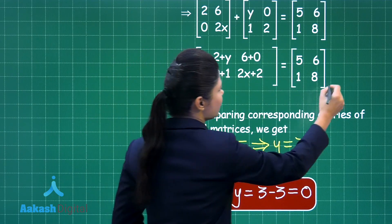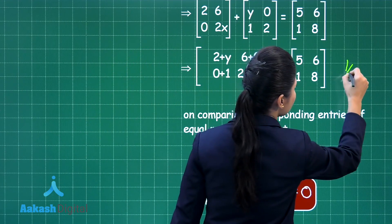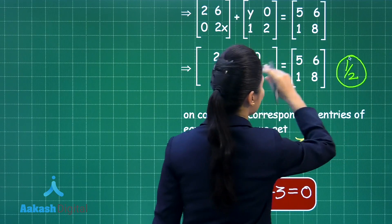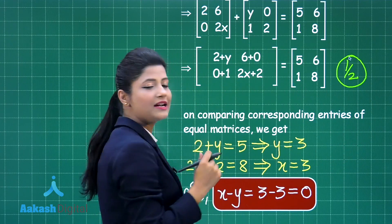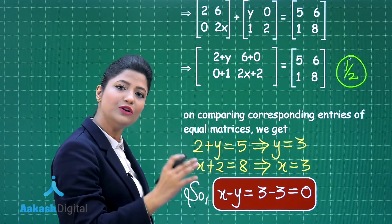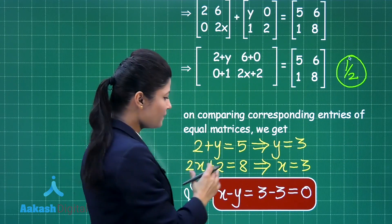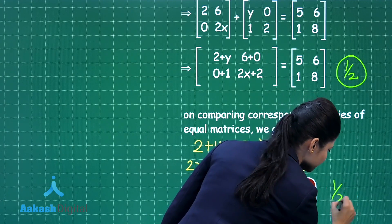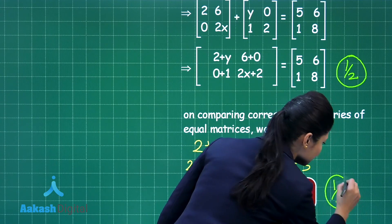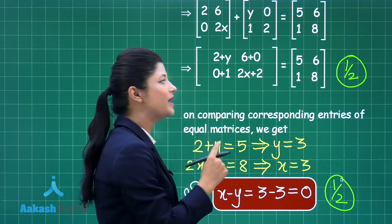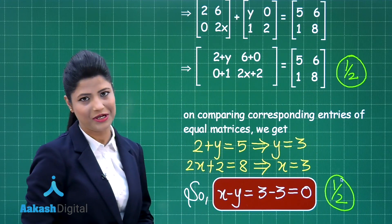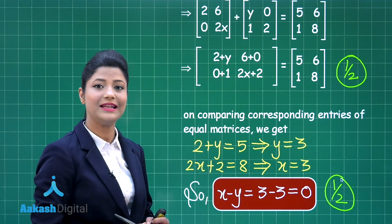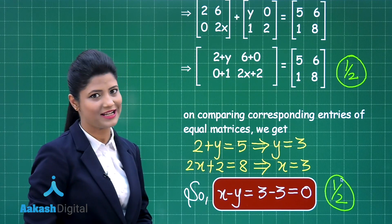If you solve up to obtaining two equal matrices you get half marks, and when you obtain the value of x − y you get the remaining half mark, giving you a total of 1 mark for this question. I hope it is clear to you. Let us proceed ahead to our next question.